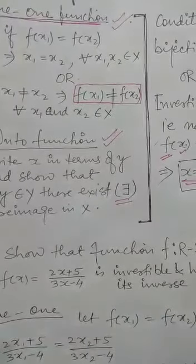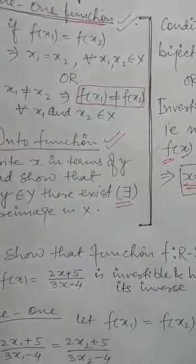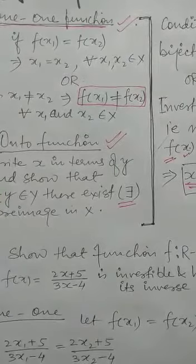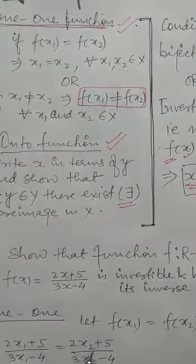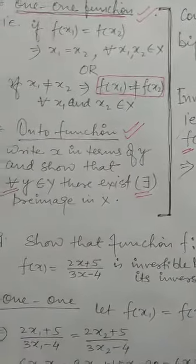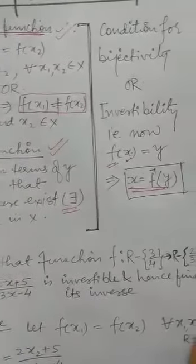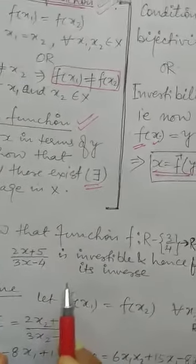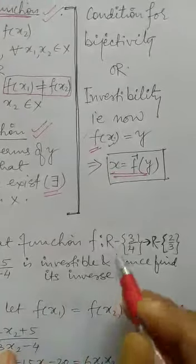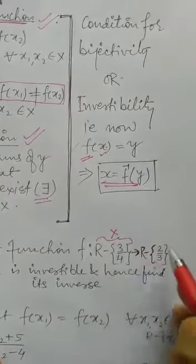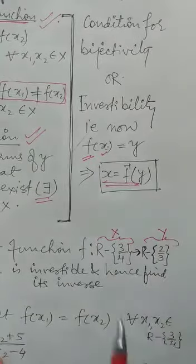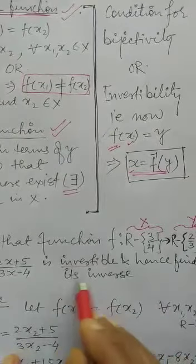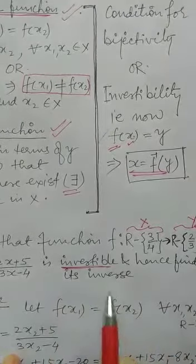Such questions are very important. Often in board examinations, they may come in 2 marks as well as 4 marks, depending upon the nature and length of the solution. Here I am taking one question: f(x) equals (2x + 5)/(3x − 4), where the function is defined from set X, which is R minus {3/4}, to set Y, which is R minus {2/3}. To be proved invertible means bijective, and hence find its inverse.